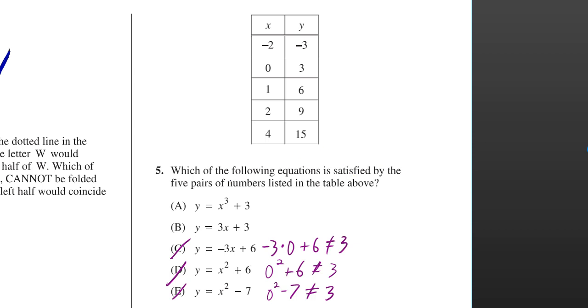Which of the following equations is satisfied by the five pairs of numbers listed in the table above? When you plug in 0 for x, you're supposed to get a y value of 3. Which means that the bottom three answers here must all be wrong, because you don't get a y value of 3 when you plug in 0 for x.